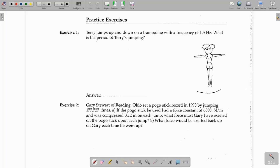Problem one, Terry jumps up and down on a trampoline with a frequency of 1.5 Hz. What is the period? So, it starts off with an easy one. Frequency is 1.5 Hz, it's looking for the period.